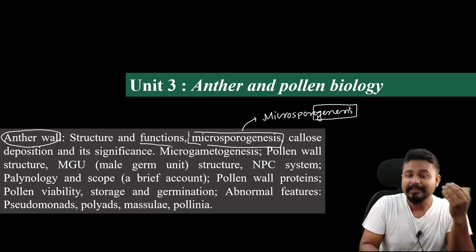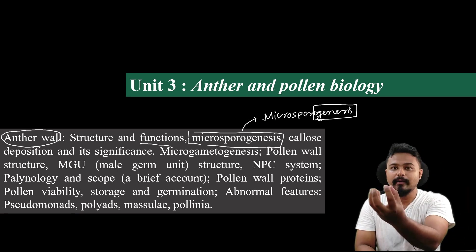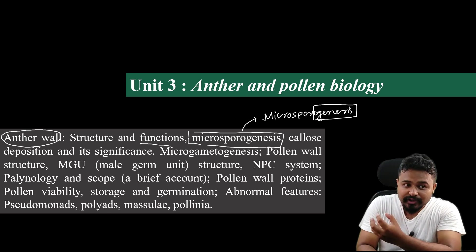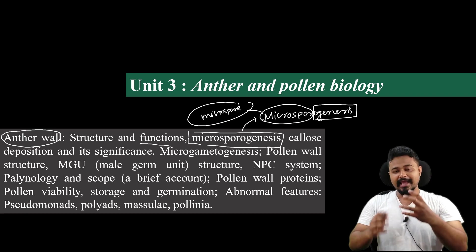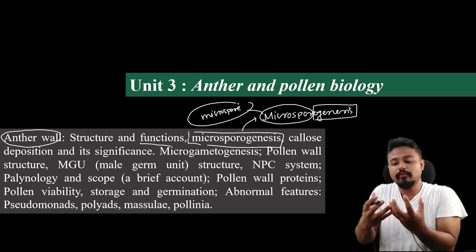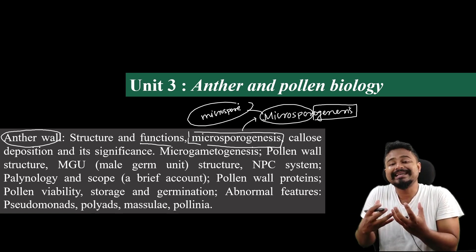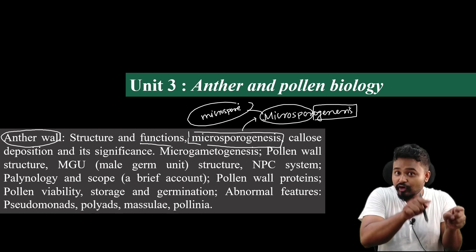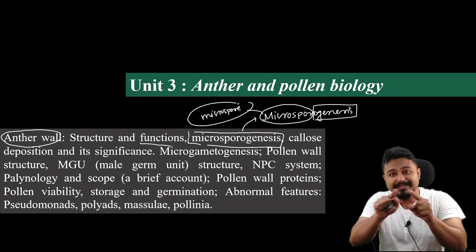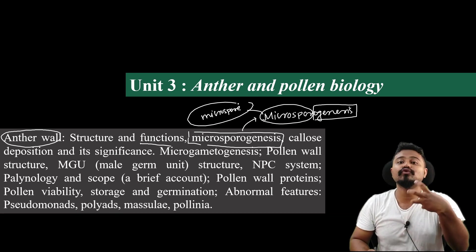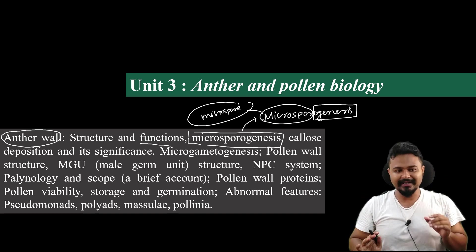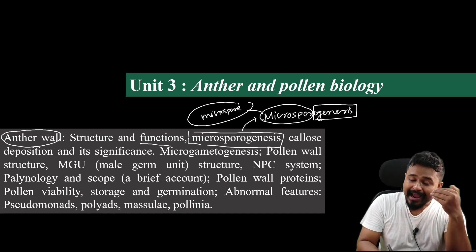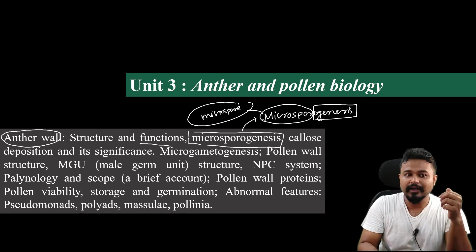Genesis means generation or production. So Microsporogenesis means microspore production — how microspores are produced. This process is called Microsporogenesis. I will discuss the details; it is very easy. This is the concept and process of Microsporogenesis.